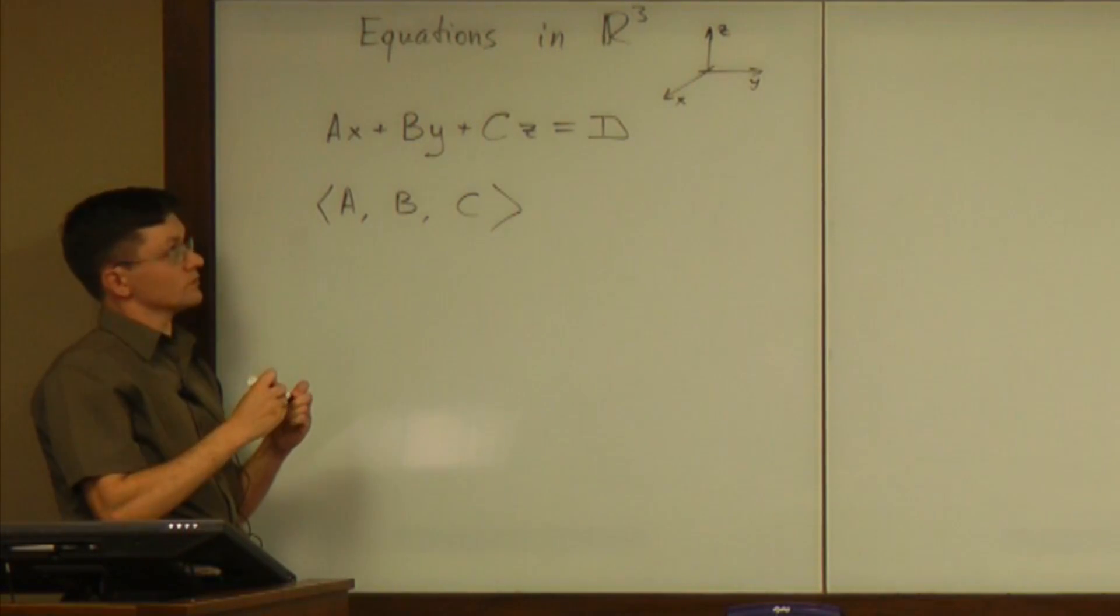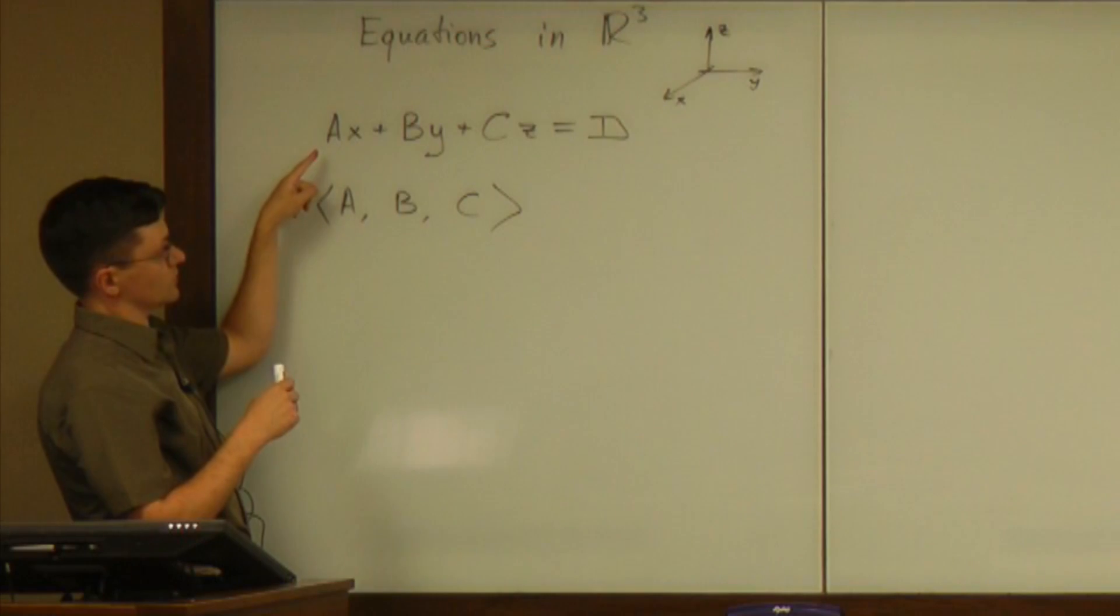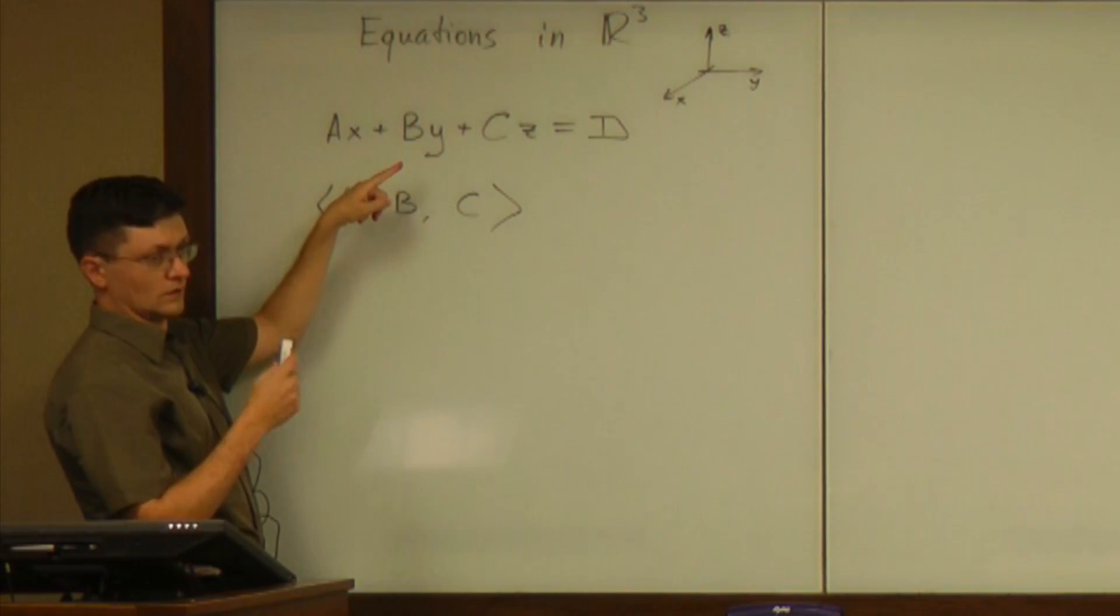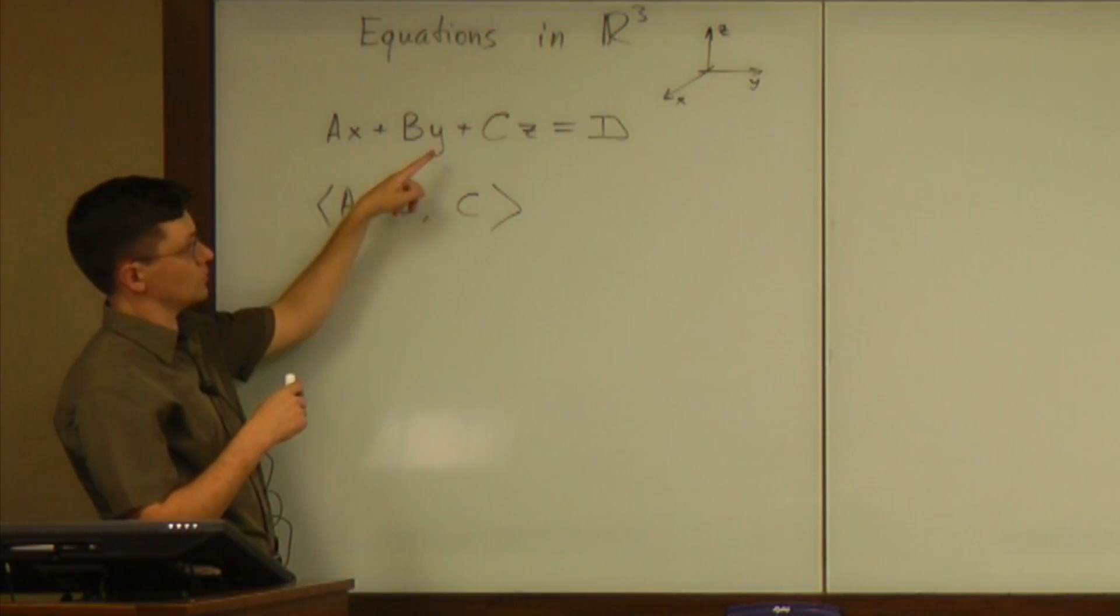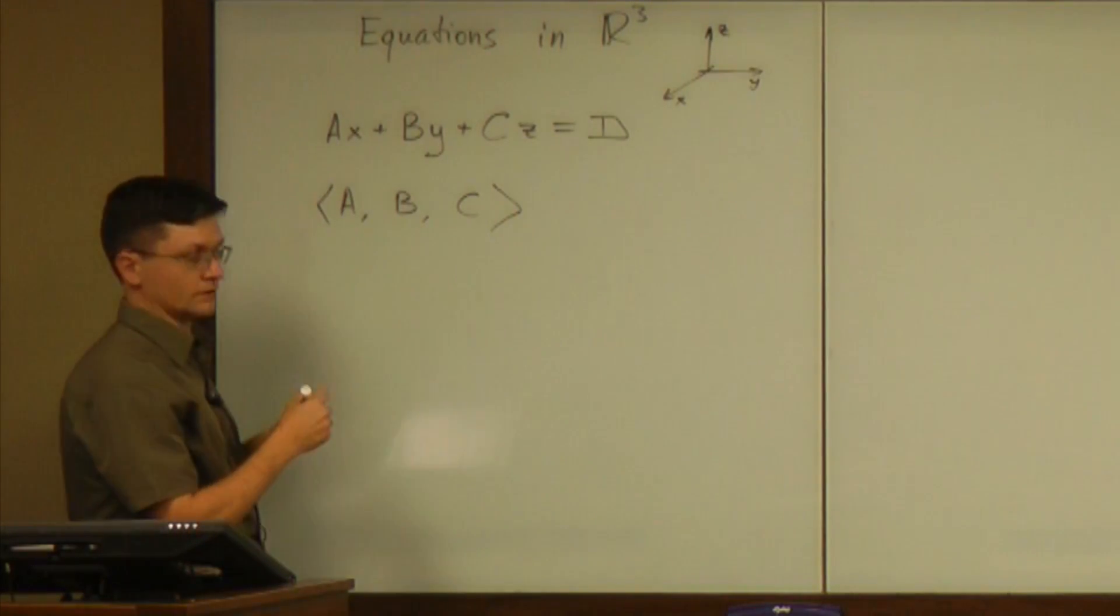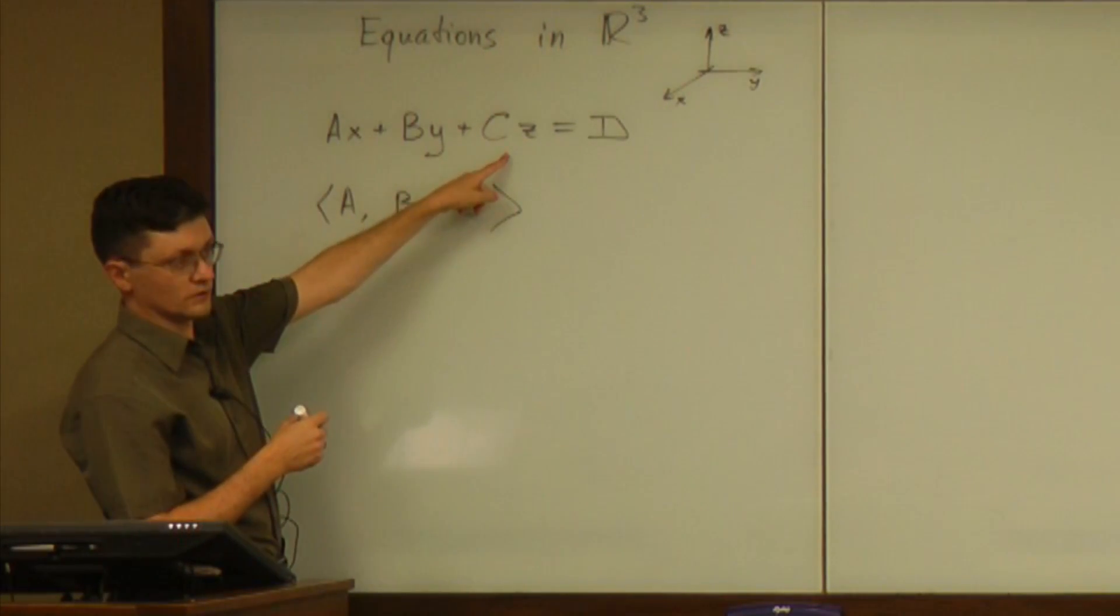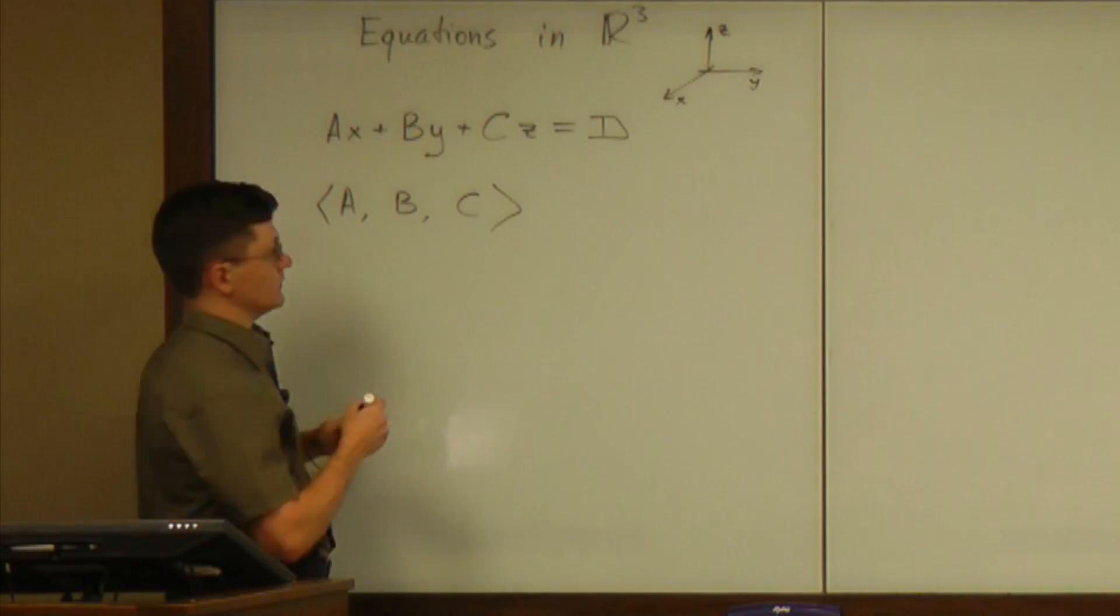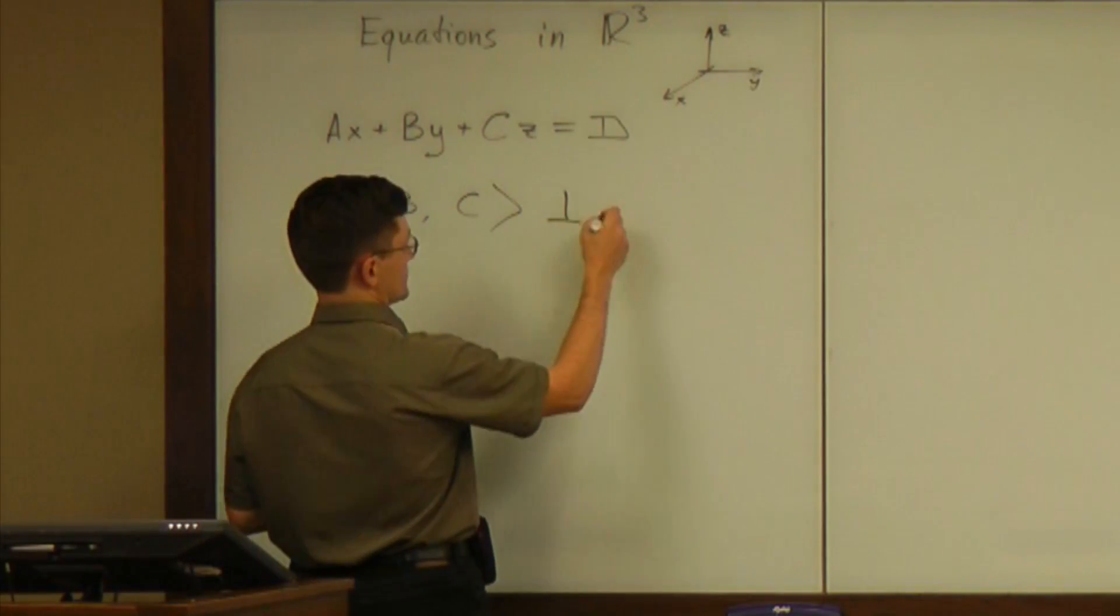And that's the point where we come to the similarity between description of a line in a plane, Ax plus By equals C. The vector a, b was perpendicular to that line. Now, a plane is going to be perpendicular to this vector a, b, c. So it's always perpendicular to the plane.